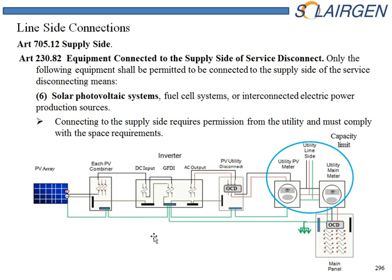Here we see a line diagram representing a typical residential installation. In this case, we have two meters. This is the line side of the utility, and this often requires a rebuilding of the service. Occasionally, you'll find a service that has capacity within the equipment to actually tap in on the line side. You'll have to look at the equipment and see if it's rated for it. If it is the utility's equipment, you'll have to get permission from them to make the tap. And if they say no, then you'll have to rebuild the service. That covers line side connections — utility scale is another matter and not covered here, but the rules basically follow the same.